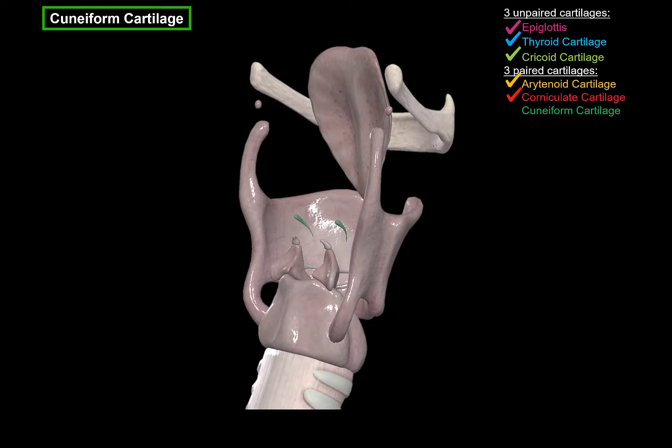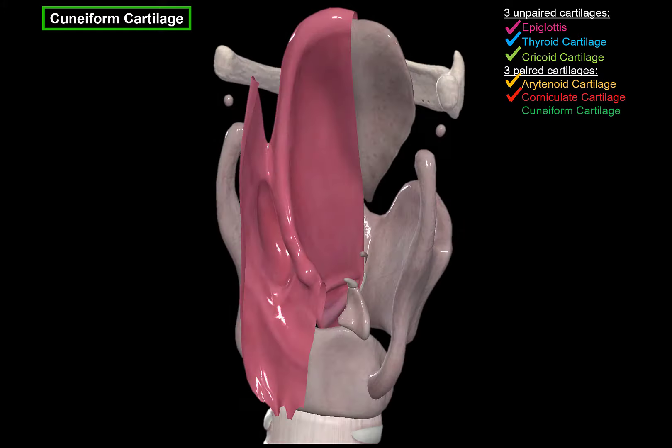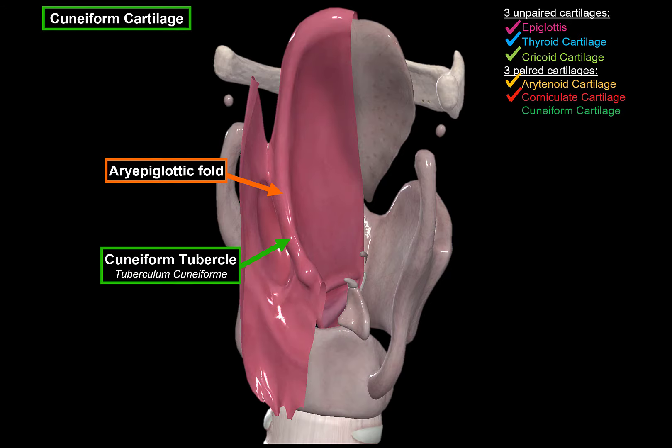The last ones are the cuneiform cartilages, here highlighted in green. There are two small elongated pieces of yellow elastic cartilage, which lie in something called the aryepiglottic fold. The aryepiglottic fold is essentially a fold that lines the entrance of the larynx. The cuneiform cartilage forms a tubercle on it, which is visible if you examine the larynx of a patient. This tubercle is called the cuneiform tubercle.